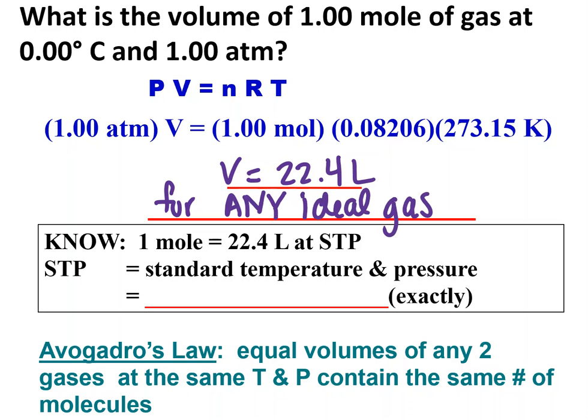So for any ideal gas, 22.4 liters for a mole. And so this makes a helpful conversion factor sometimes when we're dealing with gases, to just assume standard conditions. We call this STP.